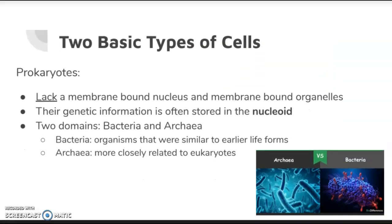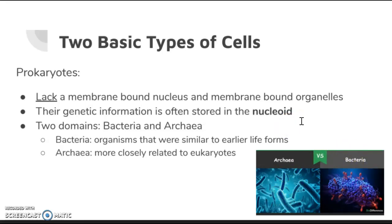The two basic types of cells are prokaryotic and eukaryotic. Prokaryotic cells — starting with P for primitive — lack membrane-bound organelles as well as a nucleus. They don't have the organelles we'll discuss later. Their genetic information is often stored in a nucleoid region, with DNA floating inside them. Prokaryotic cells are only bacteria, including ancient bacteria or archaea, as well as regular bacteria.